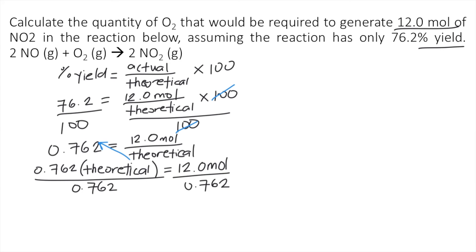So 0.762 cancels on the left side. So on the left side, we have the theoretical yield. Let's write it completely. Theoretical yield, that's equal to 12 moles divided by 0.762.